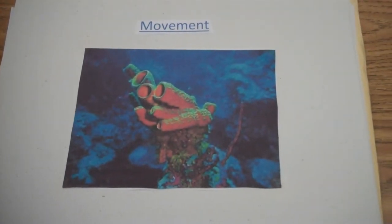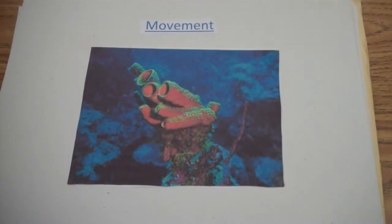A sponge can only move when it is a larva by the water currents. It then sticks to a rock and grows.